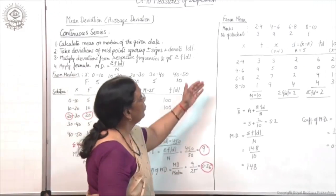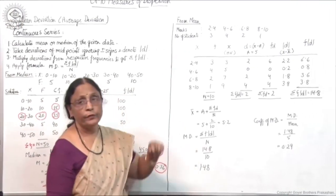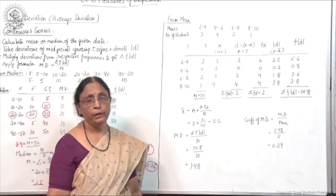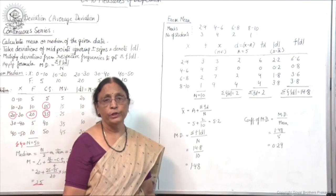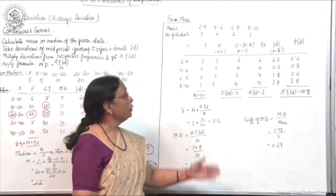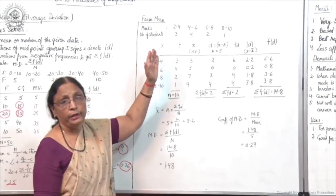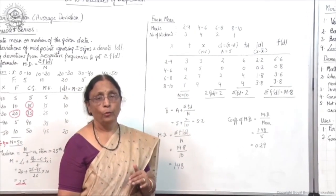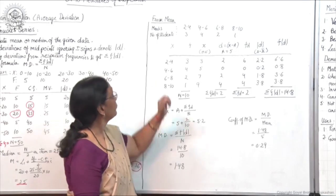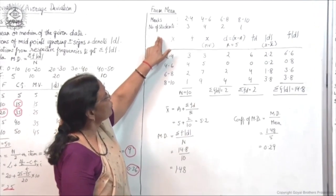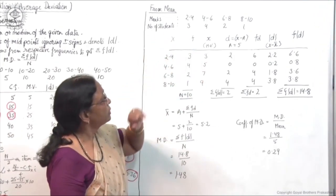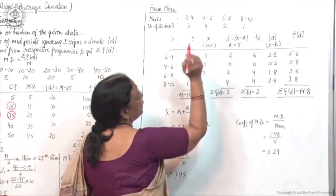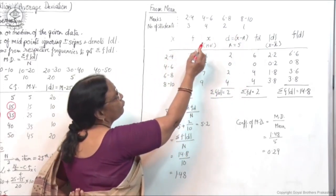Now we take calculation of mean deviation from mean. Mode is normally avoided because mode is an uncertain value. Mean and median are more popular, and out of these two, mean is more popular. The example: marks 2–4, 4–6, 6–8, 8–10 with number of students 1, 3, 4, 2, 1.